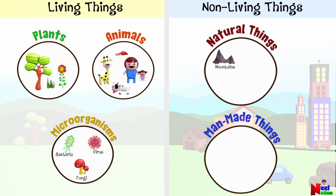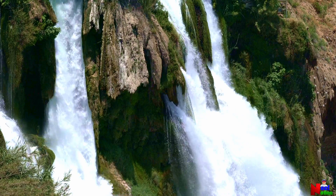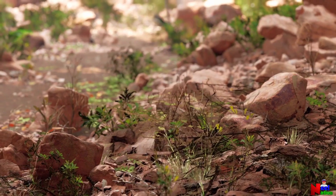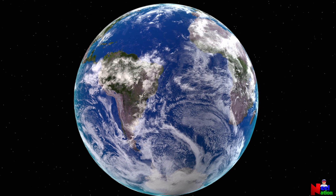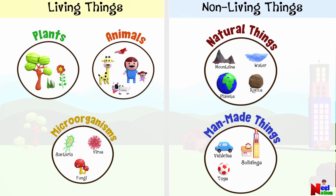Non-living things can be largely grouped into natural things and man-made things. Mountains, water, rocks, soils, and space objects like planets and stars are all formed naturally. Man-made things are objects or items that have been made by humans — your vehicles, houses, buildings, toys, and machines are all man-made non-living things.